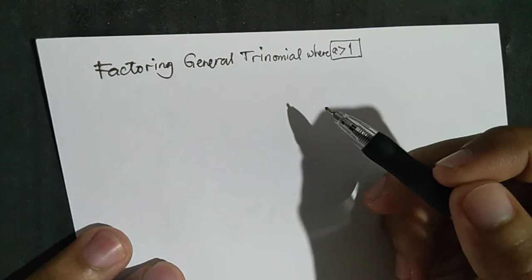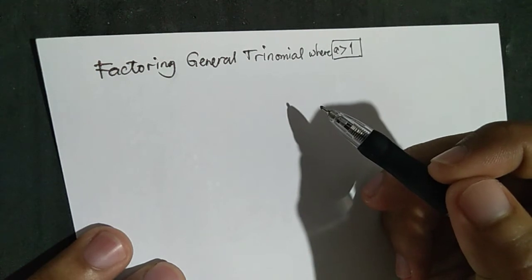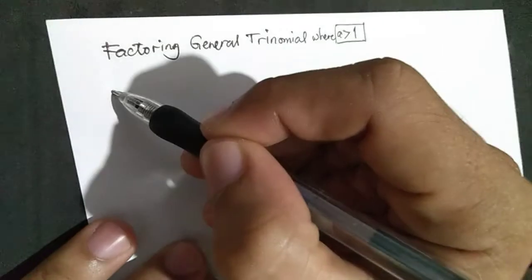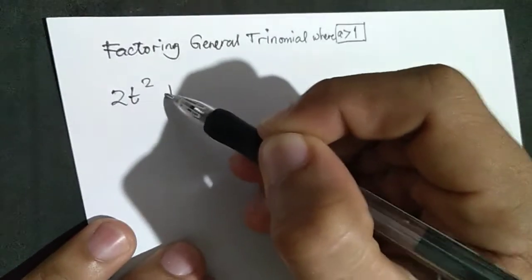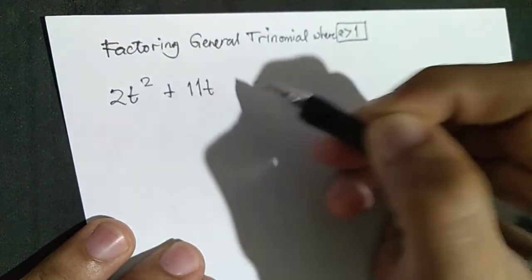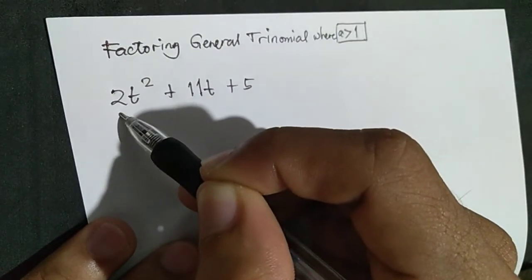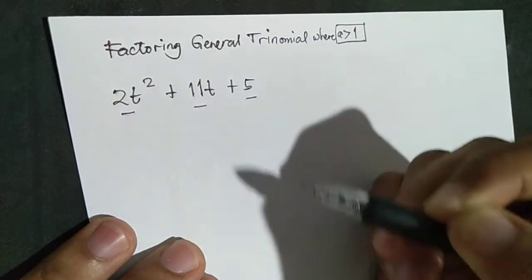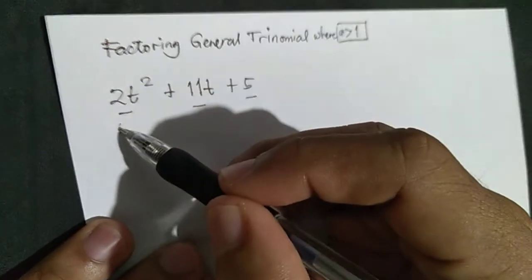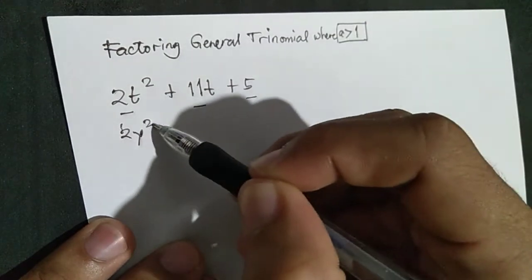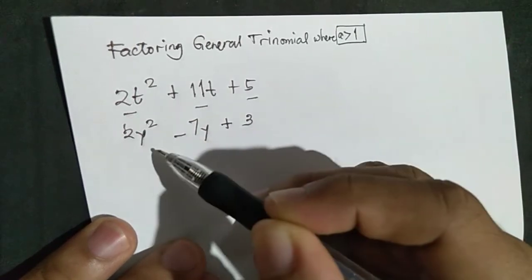A trinomial is a polynomial with three terms in one variable of second degree. An example is 2T squared plus 11T plus 5 — it is a trinomial with three terms. Another example is 2Y squared minus 7Y plus 3, also a trinomial with three terms.